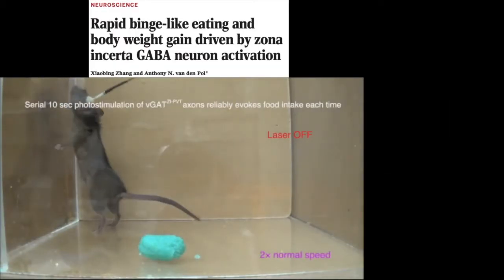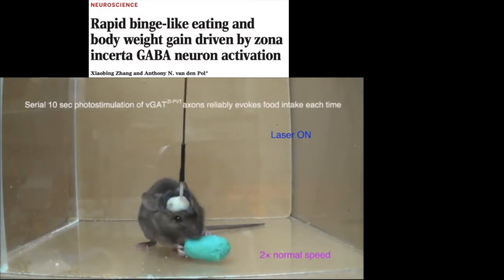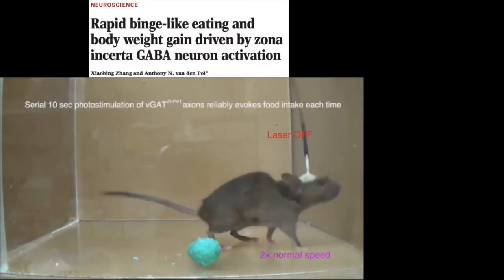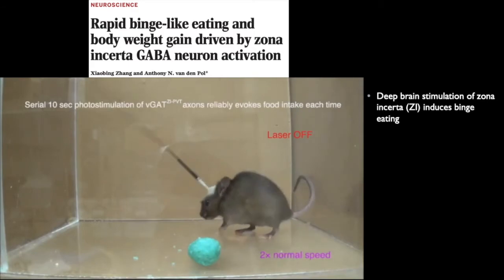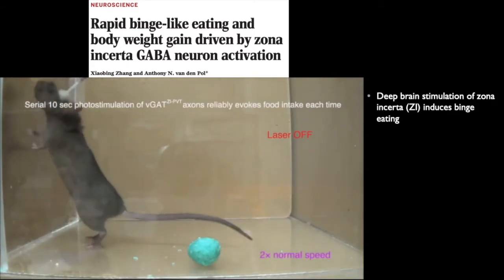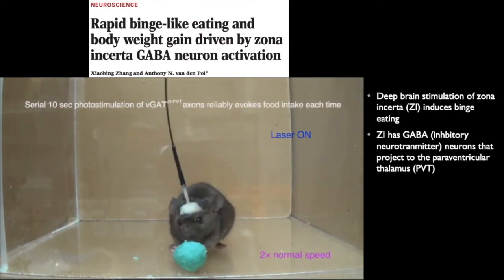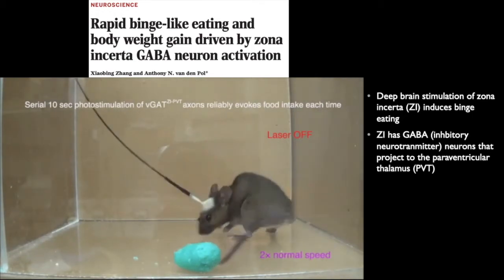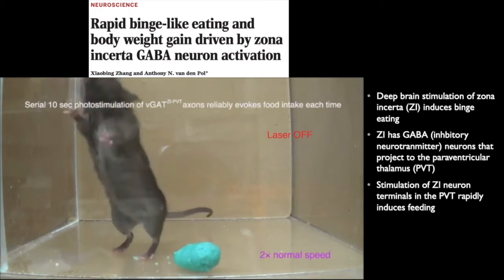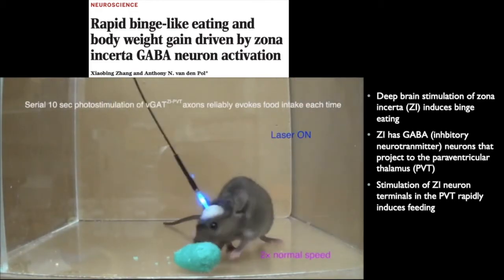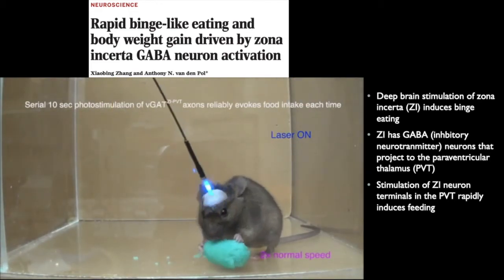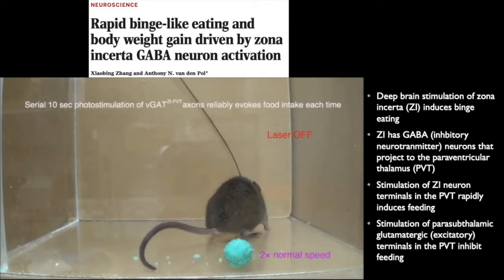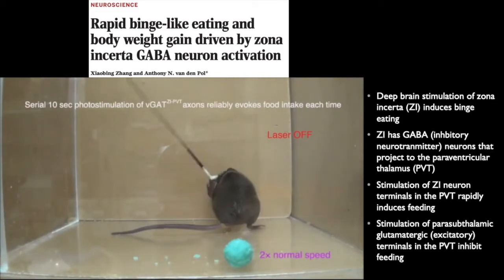Another example of how optogenetics can elucidate the function of different brain areas involves the zona incerta. It was previously shown that stimulation of the subthalamus, including the zona incerta, induces binge-like eating. The authors probed the zona incerta and its downstream target, the paraventricular thalamus. Optogenetic stimulation of zona incerta GABAergic neuron terminals in the paraventricular thalamus rapidly induces feeding. They also showed using optogenetics that glutamatergic neurons projecting from the paraventricular nucleus to the paraventricular nucleus of the thalamus can act in opposition to the zona incerta and inhibit food intake. Imbalances in the activity of these neurons can lead to anorexia or obesity.